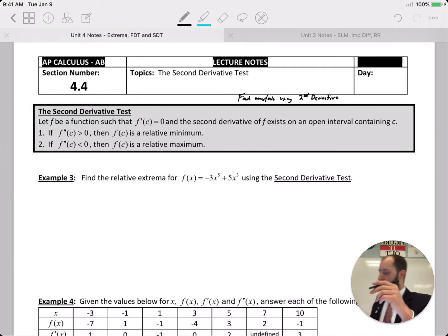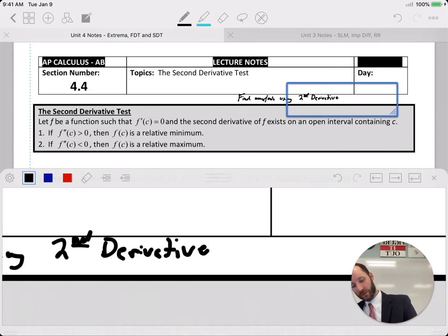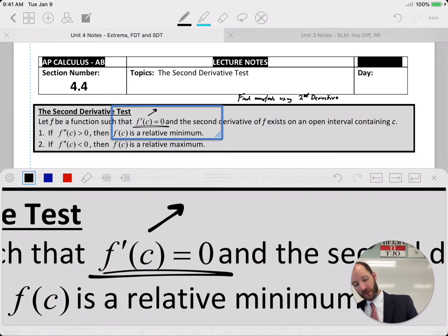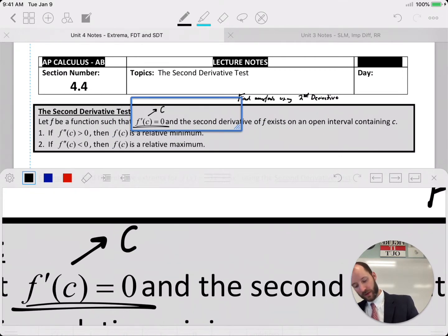So we have f as a function such that f prime at c equals 0. If f prime equaling 0 at c, this means we have a critical number. The second derivative of f exists on the open interval. So it's a twice differentiable function where the first derivative equals 0.